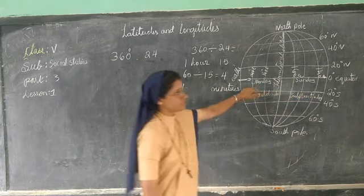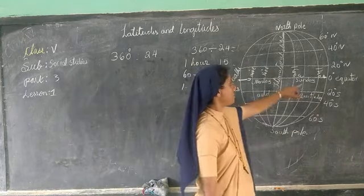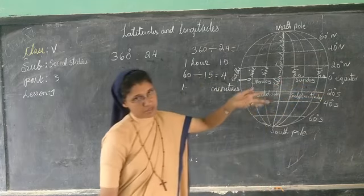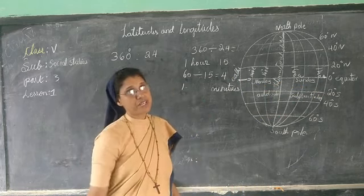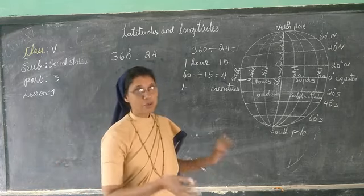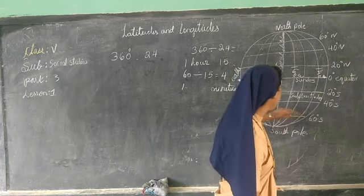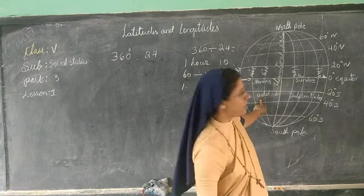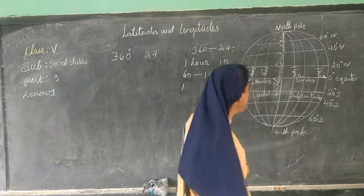For example, when it is daytime in India, it will be night in America. So when we go from India to America — going to the west side — we reach the same day, so we are not losing a day. Whereas when we come from America to India, that is coming to the east side, it is adding a day. And when going to the west side, it is subtracting a day.